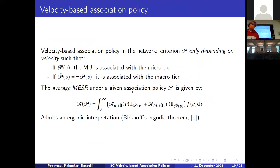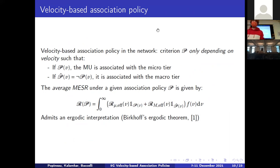We now define a velocity-based association policy using a criterion T that depends only on velocity — not on network geometry. We want to find T such that if a mobile user's velocity satisfies the criterion, it associates with the micro tier; otherwise it associates with the macro tier. We define an average MESR under a given association policy using an integral form: we take a large ball centered at the origin, compute the MESR for all mobile users inside, average, and use an ergodic theorem to obtain the integral formula.